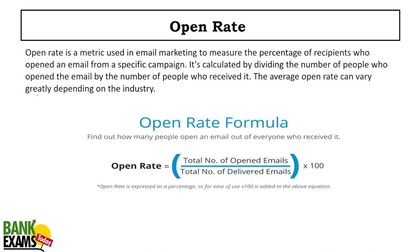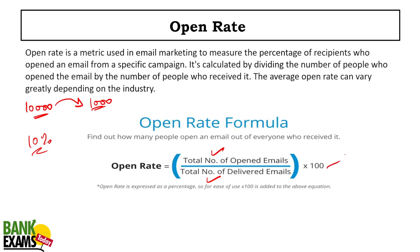Open rate: if I send 10,000 emails to students and only 1,000 students open that email, the open rate is 10%. The formula is: number of opened emails divided by number of delivered emails, multiplied by 100.